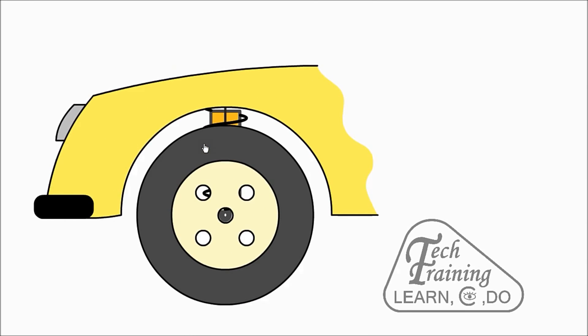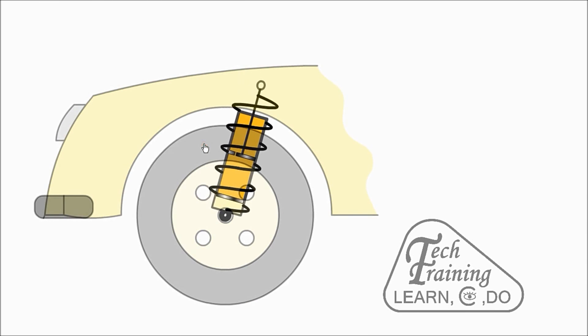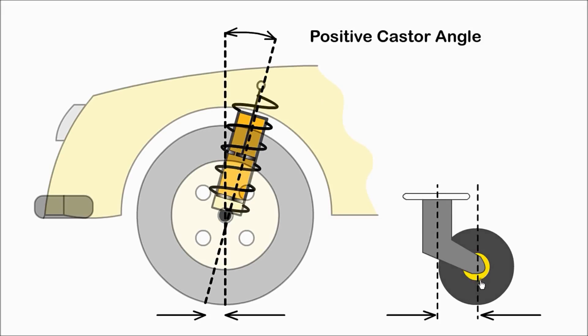Caster is the angle between a line extending through the steering pivot axis and a vertical line through the centre of the wheel. When the steering pivot axis meets the road in front of the wheel contact point, it will result in an inbuilt tendency to travel in a straight line. With a T-trolley, the wheels always follow the direction in which the trolley is pushed. Most cars have positive caster.